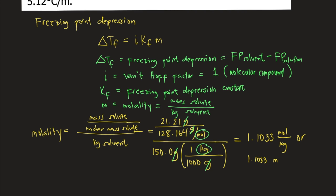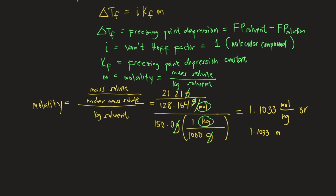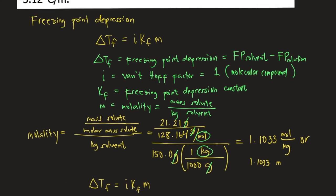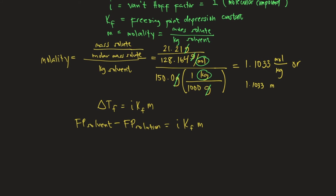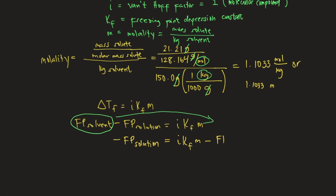Now that we have the molality, let's go back to the original equation: ΔTf = i·Kf·M, where ΔTf equals the freezing point of solvent minus the freezing point of solution. The problem is asking for the freezing point of the solution, so we rearrange — transferring the freezing point of solvent to the right side makes it negative.